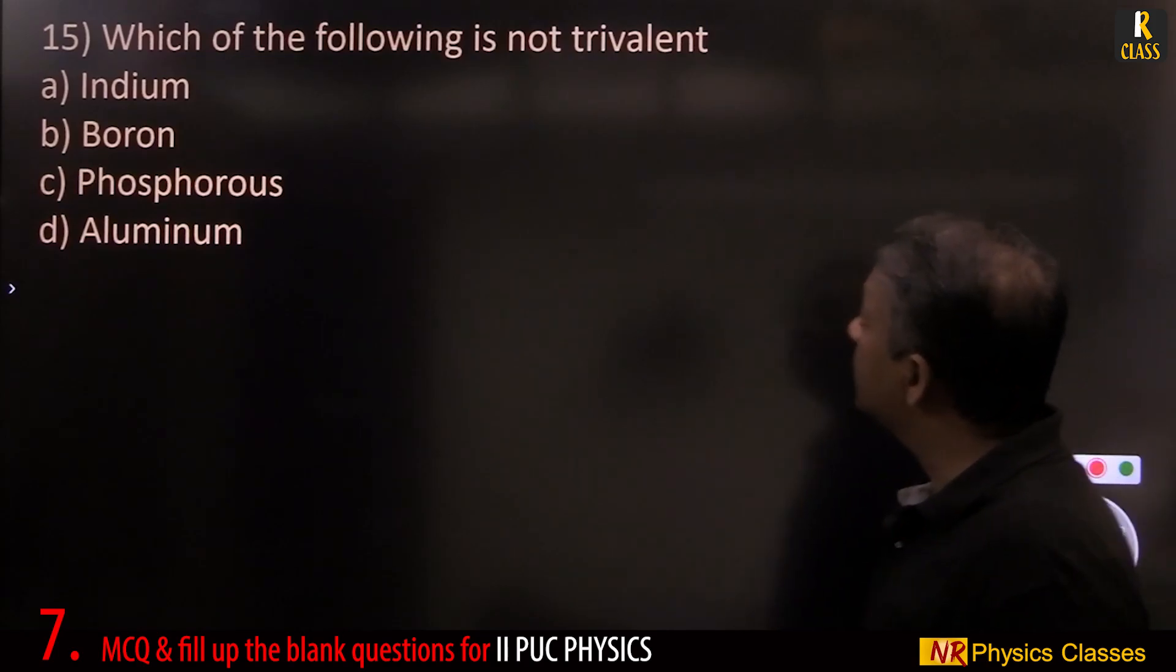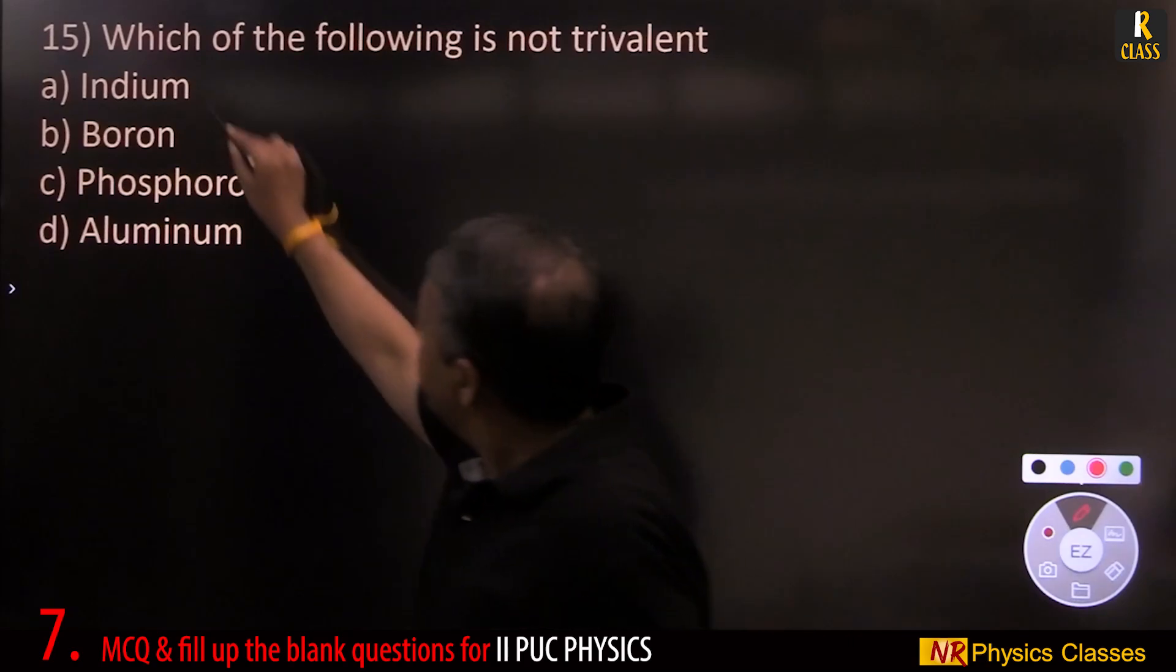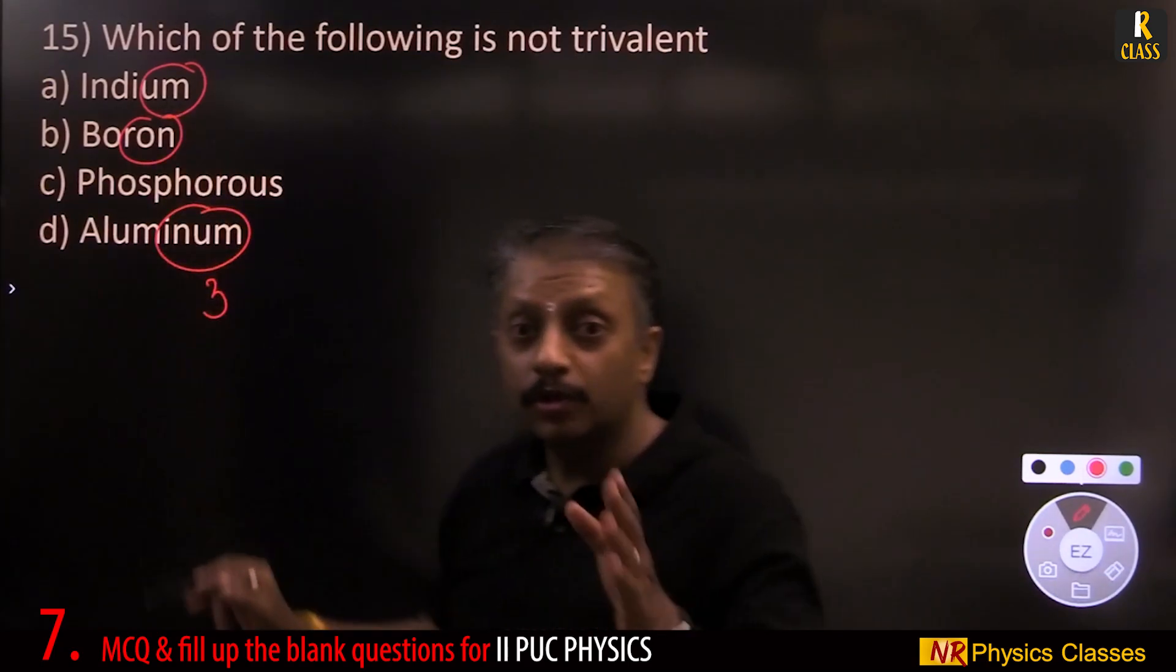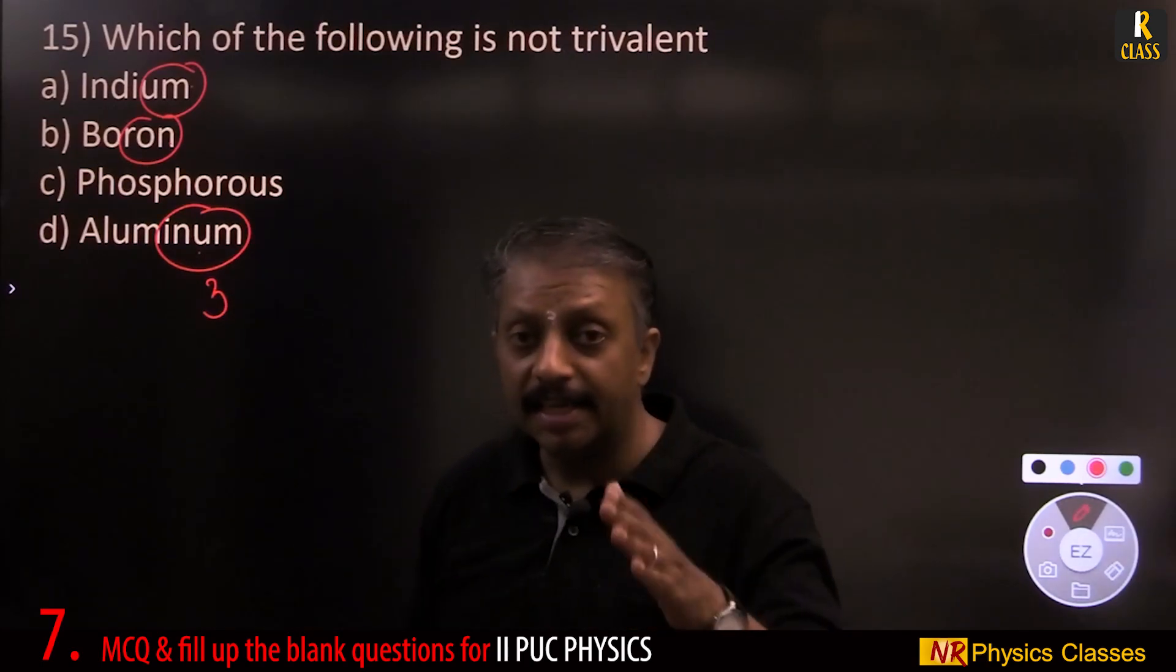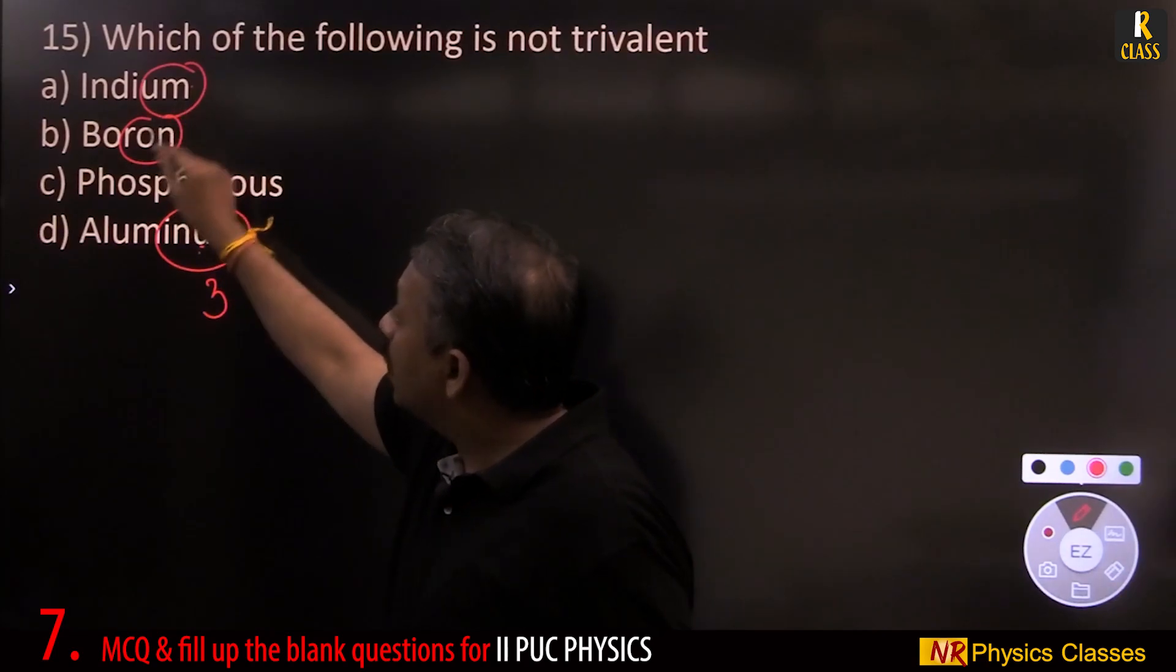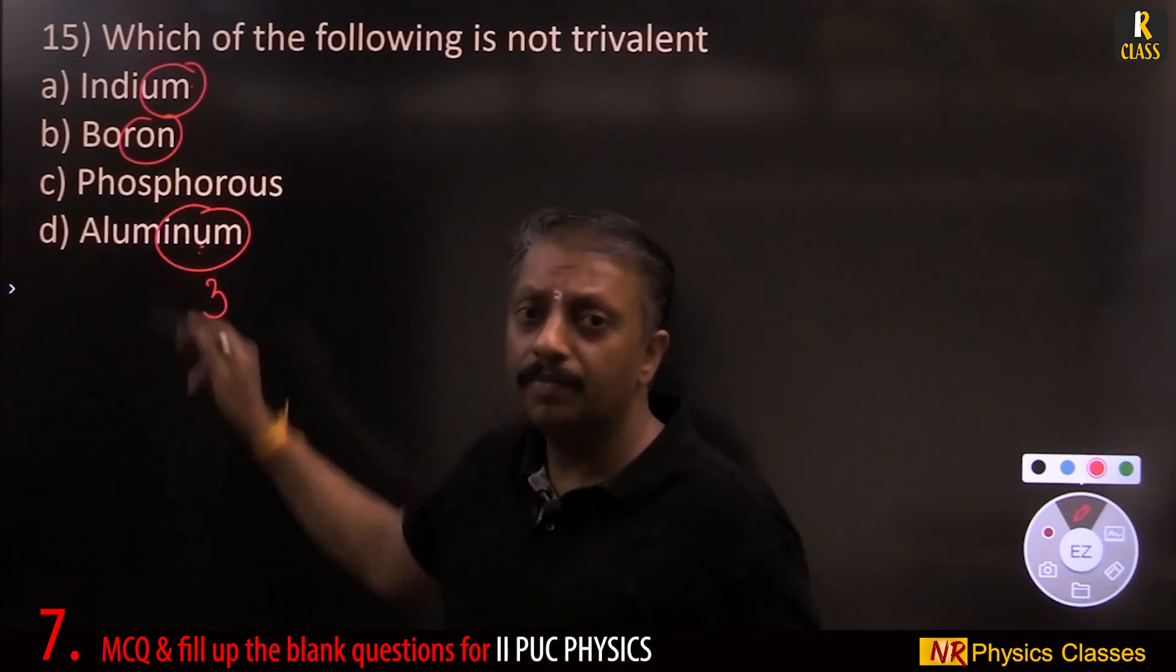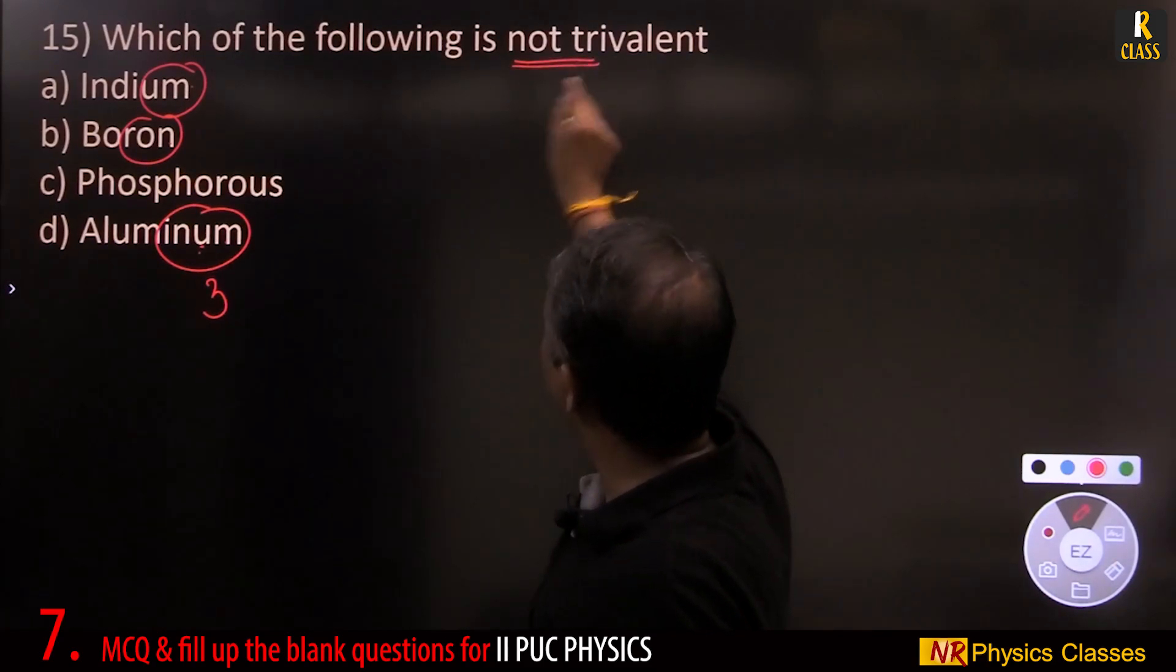Which of the following is not trivalent? Indium, boron, aluminum, these are all trivalent. Except boron, these are all trivalent. Phosphorus, arsenic, antimony, they are pentavalent. Indium, gallium, aluminum, they are all trivalent. So phosphorus is pentavalent, not trivalent.